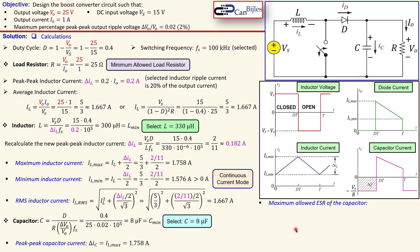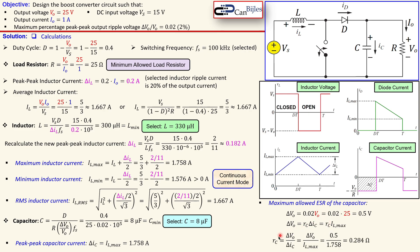An important capacitor parameter for output ripple voltage is the equivalent series resistance (ESR). First, the peak-to-peak output ripple delta-VO is 0.02 times the output voltage — which is 0.5 volts peak-to-peak. The peak-to-peak output voltage is related to the ESR times the peak-to-peak capacitor current (or maximum inductor current). Solving for the ESR gives 0.284 ohms — or approximately 284 milliohms. This is the maximum allowed ESR value, so in practice we should go a little bit lower.